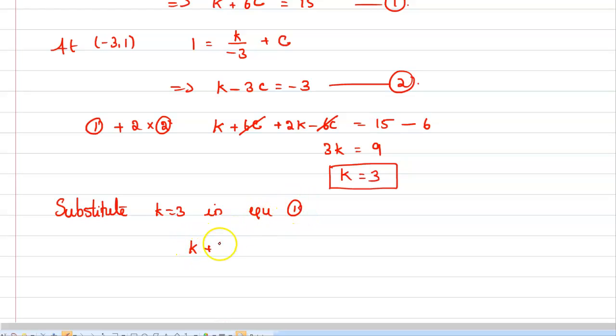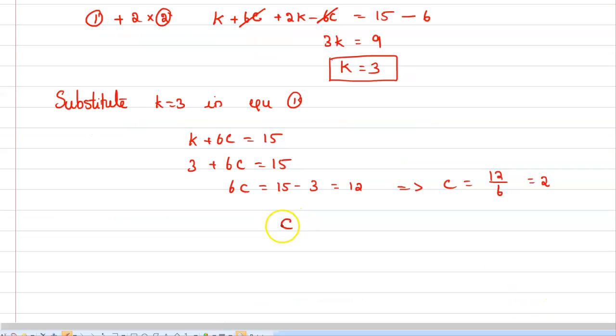Equation 1 is k plus 6c equals 15. So 3 plus 6c equals 15, which means 6c equals 12, which implies c equals 2. Hence we have k equals 3 and c equals 2.